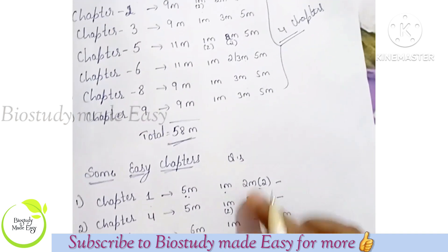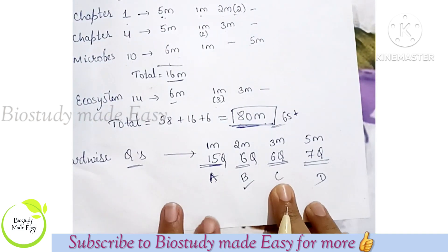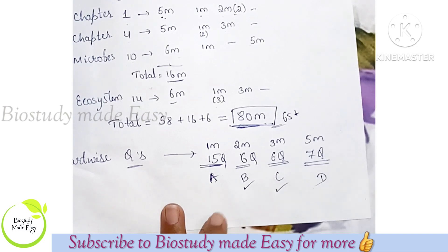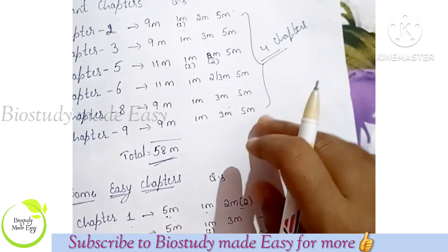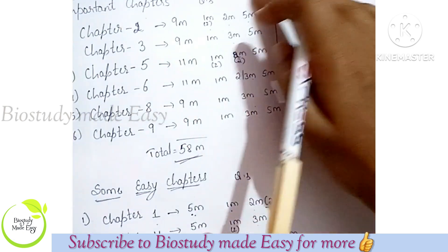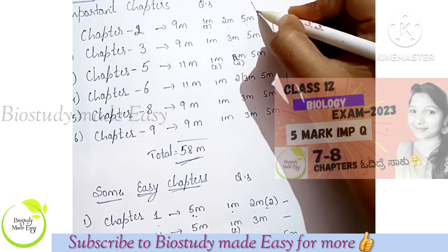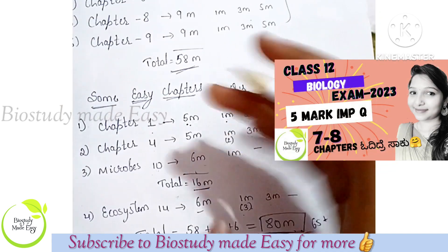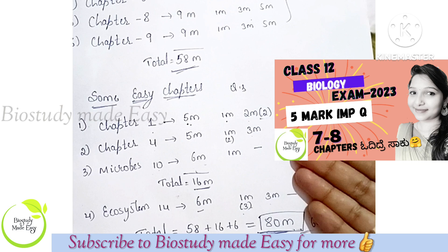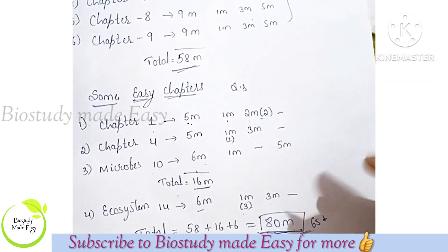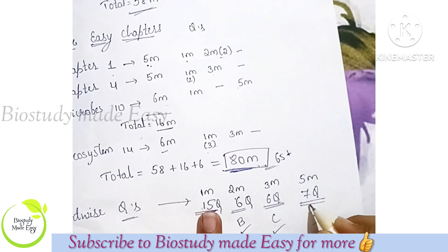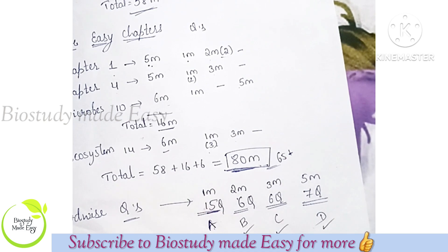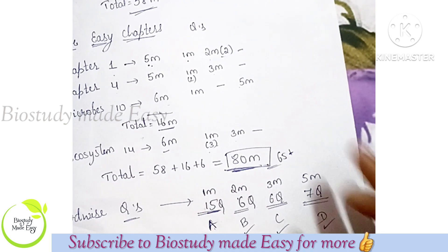Part C: 3 marks — 6 questions available, attempt any 5. Part D: 5 marks — 7 questions available, attempt any 5. The 5 mark questions are fixed from these chapters. If you study the easy chapters, 5 marks will come; if not, they won't. So Part D is also confirmed.